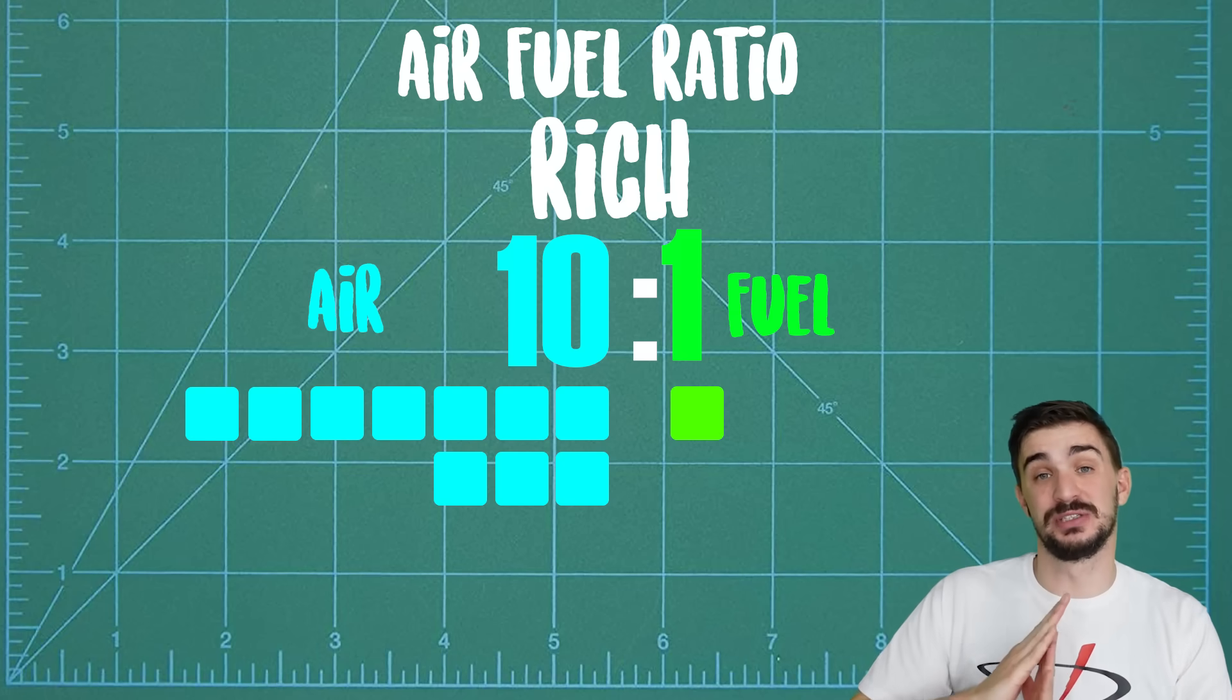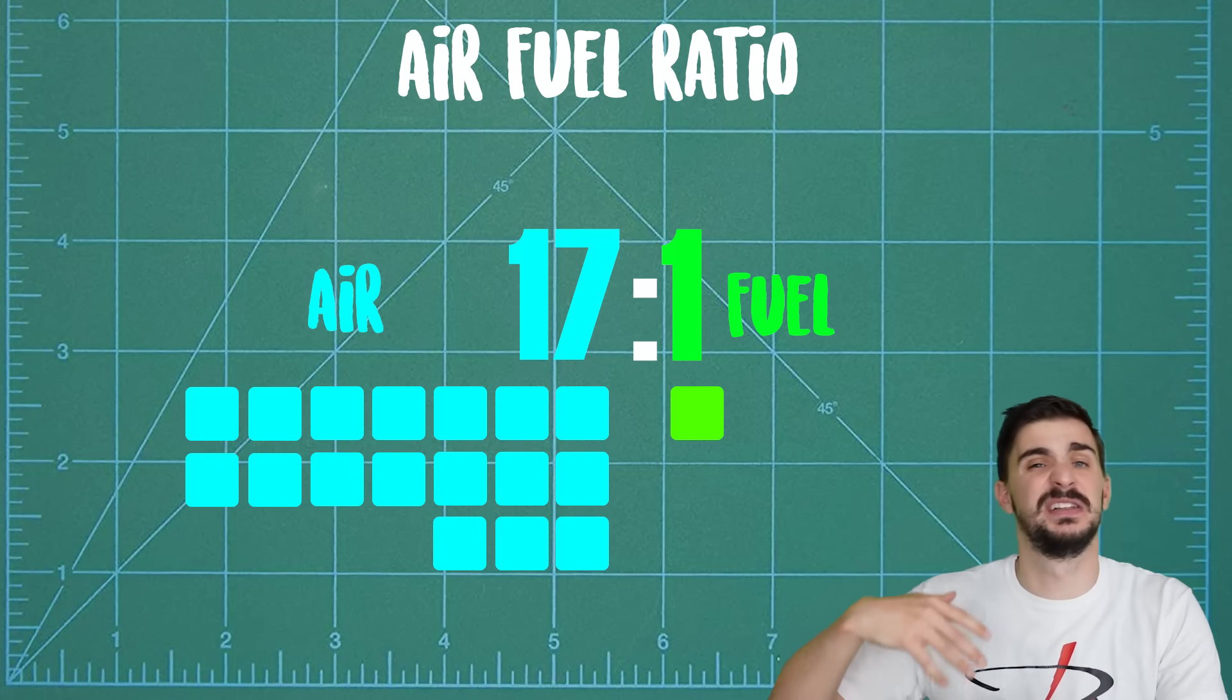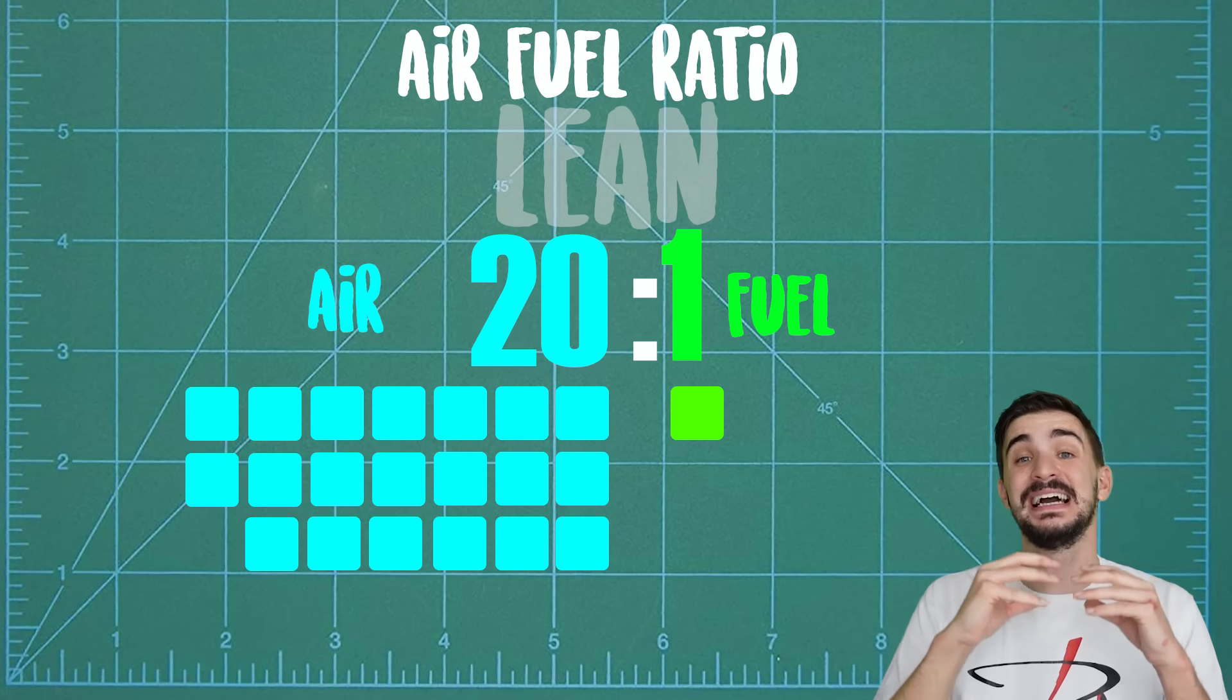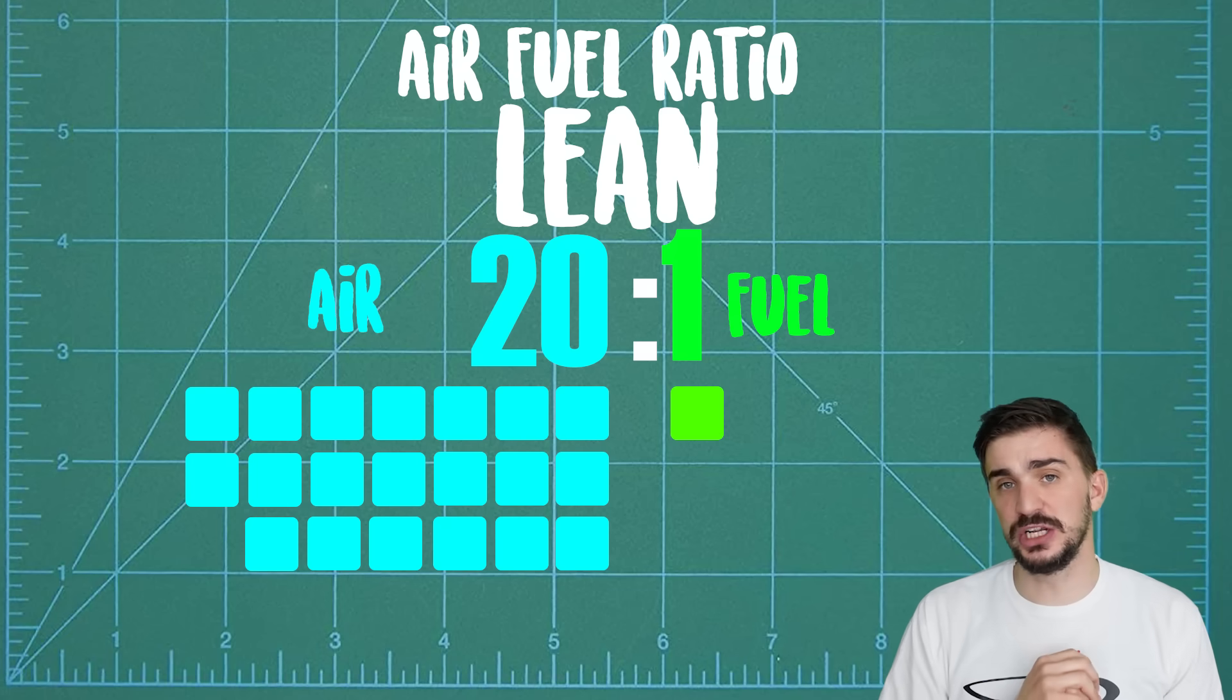At air-fuel ratios higher than 14.7 to 1, for example 15 to 1, 16 to 1, 17 to 1, even 20 to 1, we're said to be running lean. In theory there's going to be excess air inside the cylinder at these air-fuel ratios.